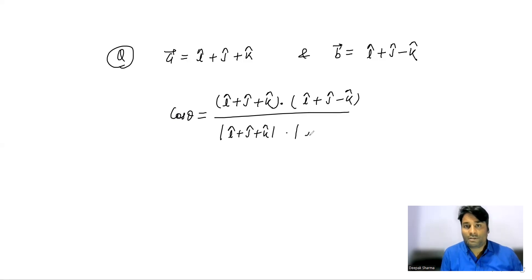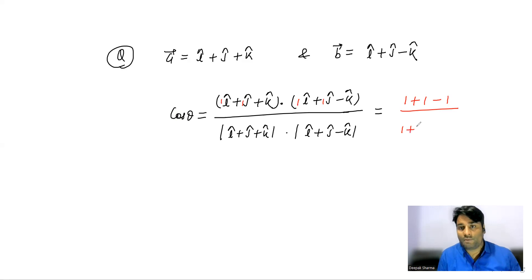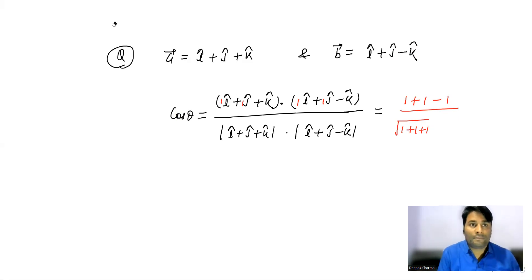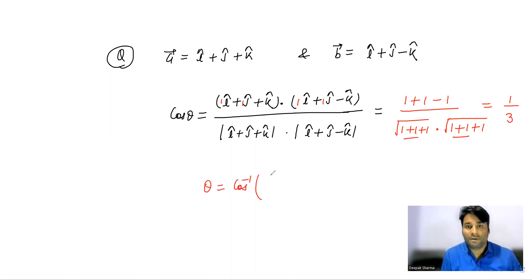Taking the dot product: 1 times 1 gives 1, plus 1 times 1 gives 1, plus 1 times -1 gives -1. So the numerator is 1 plus 1 minus 1 equals 1. The denominator: magnitude of a is root(1+1+1) = root 3, and magnitude of b is also root 3, giving root 3 times root 3 equals 3.